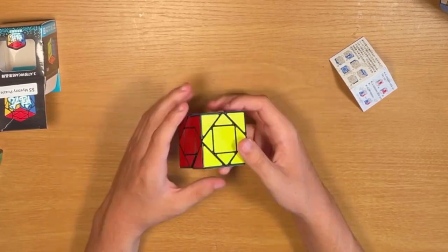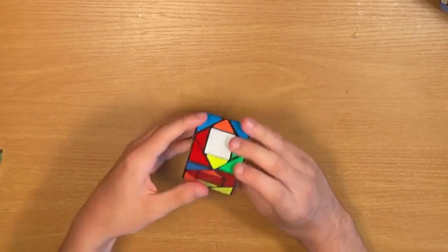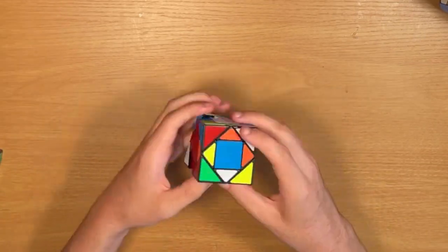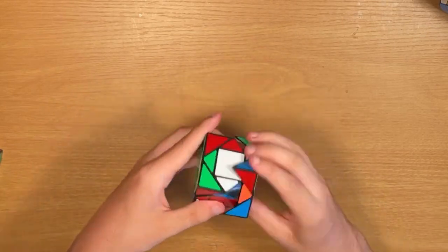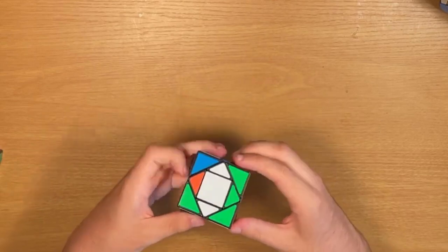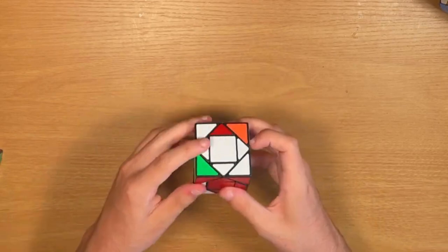So I think I'm actually going to do a solve on it. I start on yellow, because I see the yellow-red edge here. And an easy cross. So this is actually pretty simple, because it's just like a 3x3. I thought it would be harder to recognize the pieces. It seems to be going pretty smoothly.